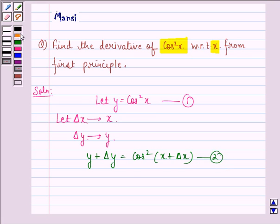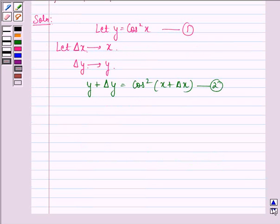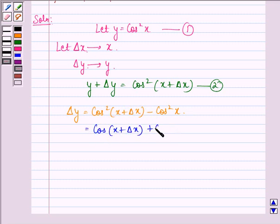Now, subtracting equation 1 from equation 2, we get delta y equals cos square of x plus delta x minus cos square x. Now, applying the formula a square minus b square equals a plus b times a minus b.